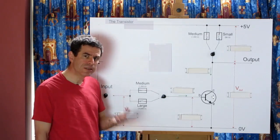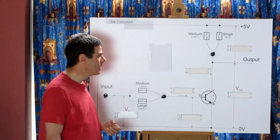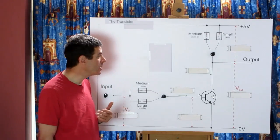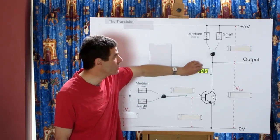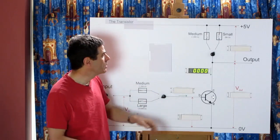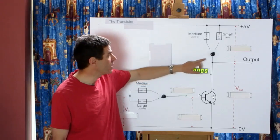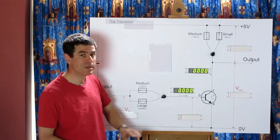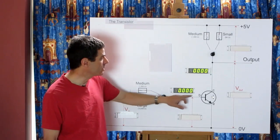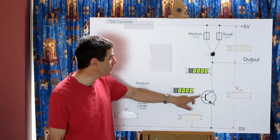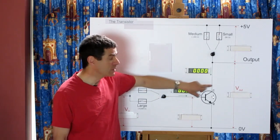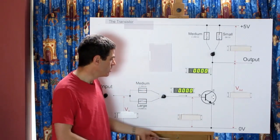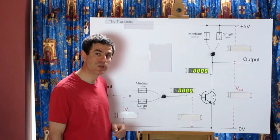The transistor is an electronic amplifier and it amplifies current, so we need to look at the current flowing. I've attached some meters to the circuit. This meter is measuring the current flowing into the collector, and this meter is measuring the current flowing into the base. All of the current that flows into these two legs must come out through the emitter. The meters are measuring milliamps of current.